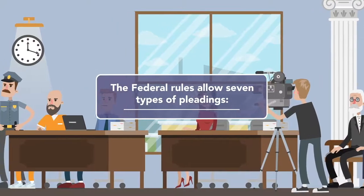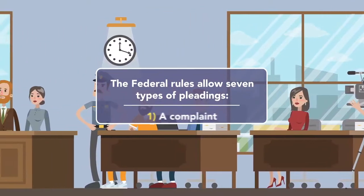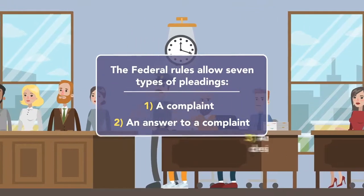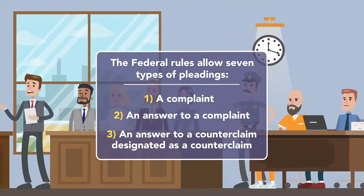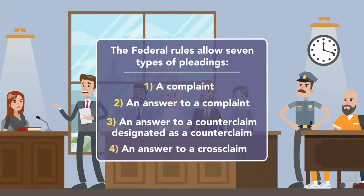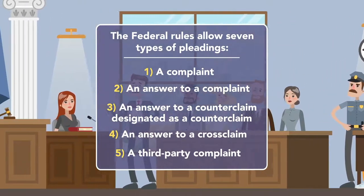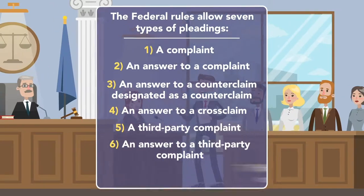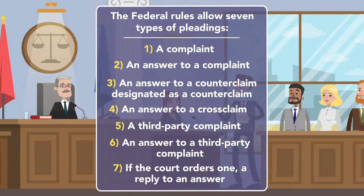The federal rules allow seven types of pleadings: a complaint, an answer to a complaint, an answer to a counterclaim designated as a counterclaim, an answer to a cross-claim, a third-party complaint, an answer to a third-party complaint, and, if the court orders one, a reply to an answer.